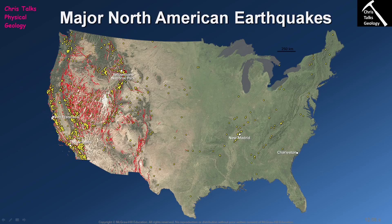When subduction finished along the western coast, the boundary changed from being a convergent plate boundary to a transform plate boundary. We know this transform plate boundary quite well because it's called the San Andreas Fault. You can quite clearly see substantial earthquake activity along the coast of California. This is the San Andreas Fault — a transform plate boundary — with a number of strike-slip faults running parallel to each other, leading to abundant earthquake activity in the surrounding region.